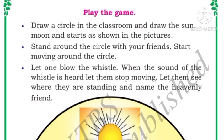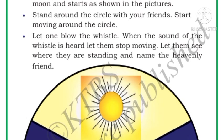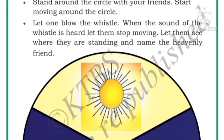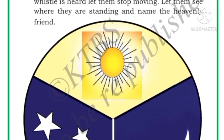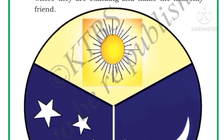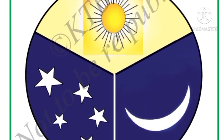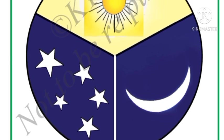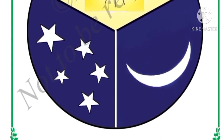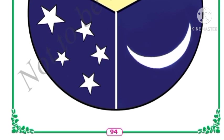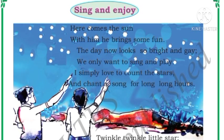Next, here is a game to play with your friends in the classroom. Draw a circle and draw the sun, the moon, and the stars as shown in the pictures. Stand around the circle with your friends and move around it. When one friend blows the whistle, everyone stops. Then look at where your friends are standing and name the heavenly bodies.